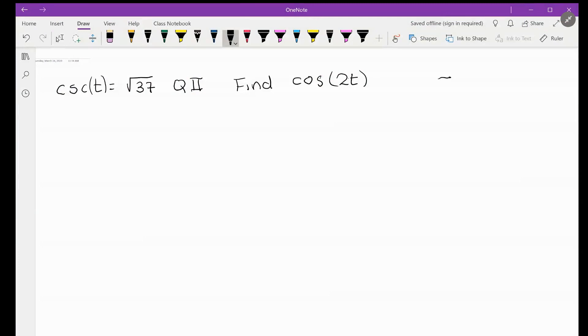Okay, in order to solve this question you need to know a couple things. The first thing is that cosecant of an angle is the same thing as one over sine of that angle, and it's also the same thing as...